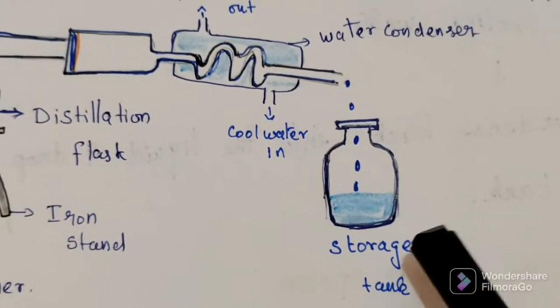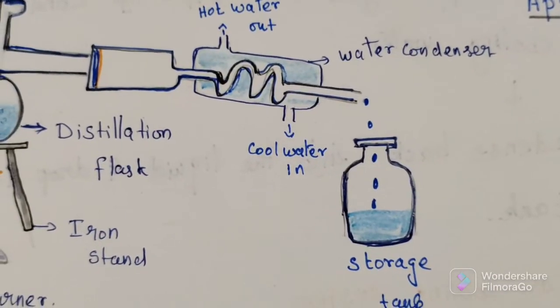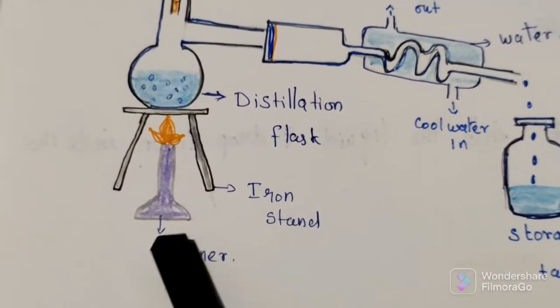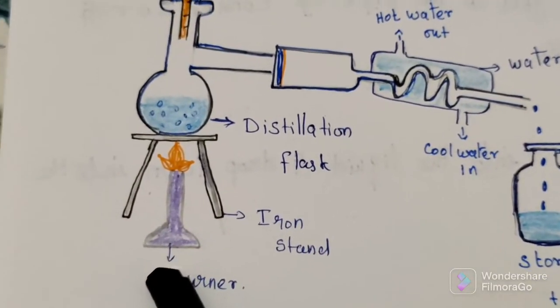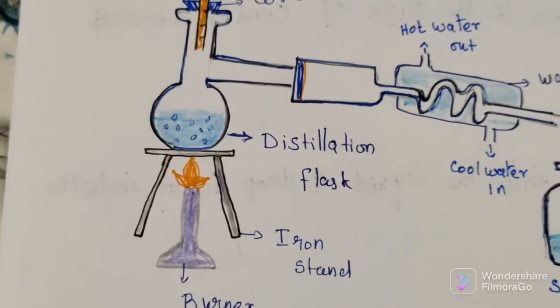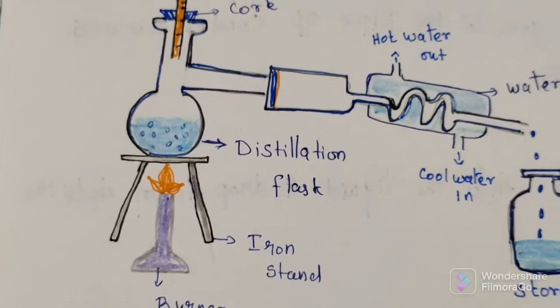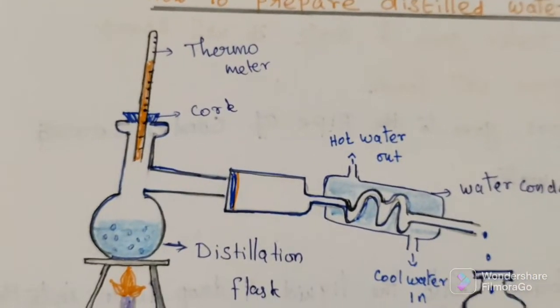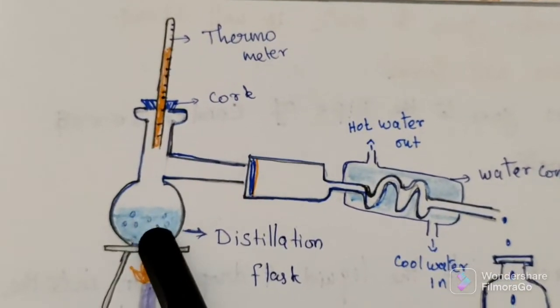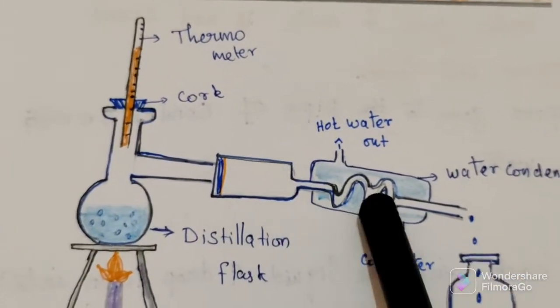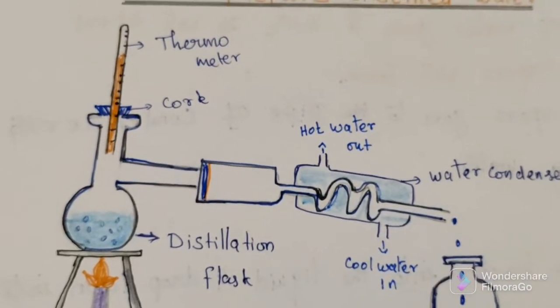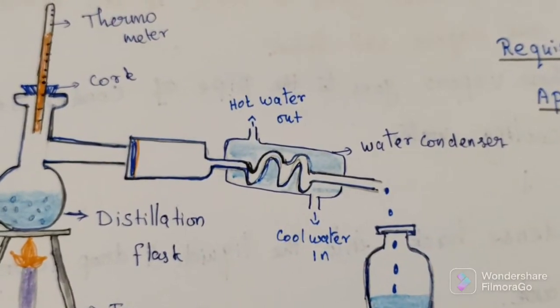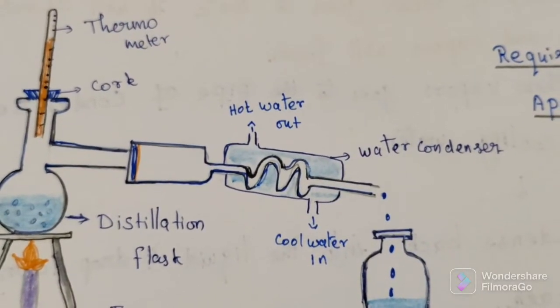Adjust the storage tank with the outlet of condenser and start the burner below the distillation flask. When it starts to reach temperature 100 degrees, it will start boiling. The vapors will form. These vapors will go up that condenser and due to cooling water, they condense back into liquid and drop down into the storage tank.